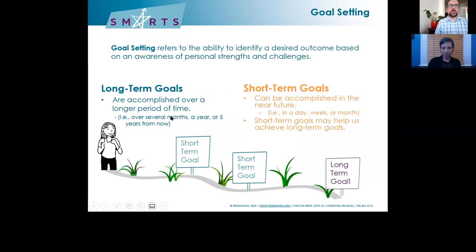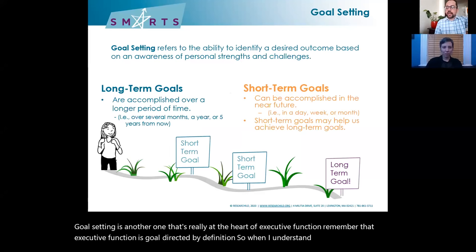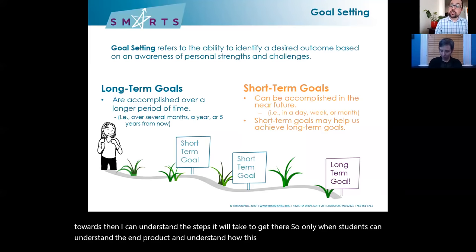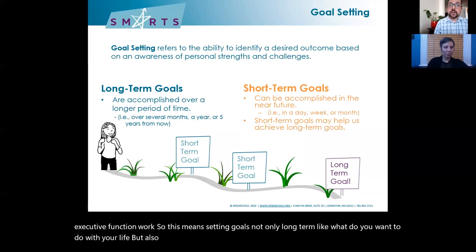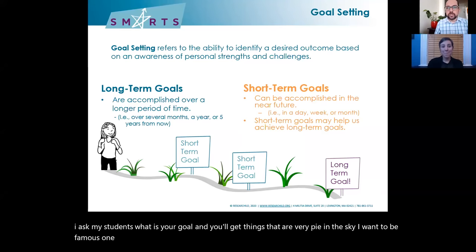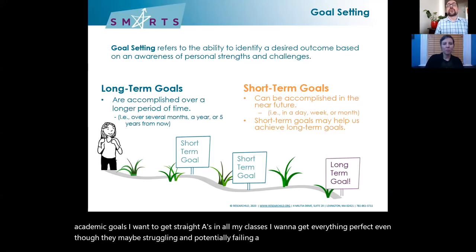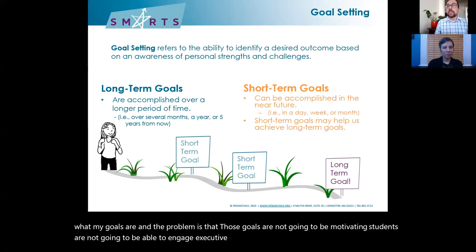Goal setting is another area at the heart of executive function. Executive function is goal-directed by definition. When students understand the goal they're reaching towards, they can understand the steps it will take to get there. Only when students can understand the end product and how they're supposed to get there are they truly doing executive function work. This means setting goals — not only long-term like what do you want to do with your life, but also short-term: here's what we're going to do today. Students can really struggle with this — you'll get things that are very pie in the sky, like 'I want to be famous,' or inappropriately academic goals like 'I want to get straight A's.'